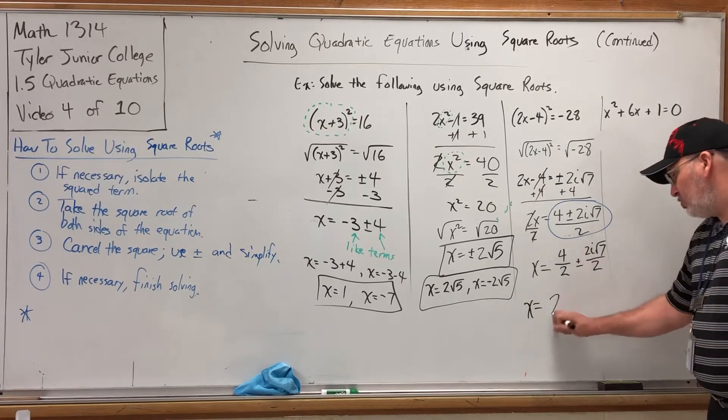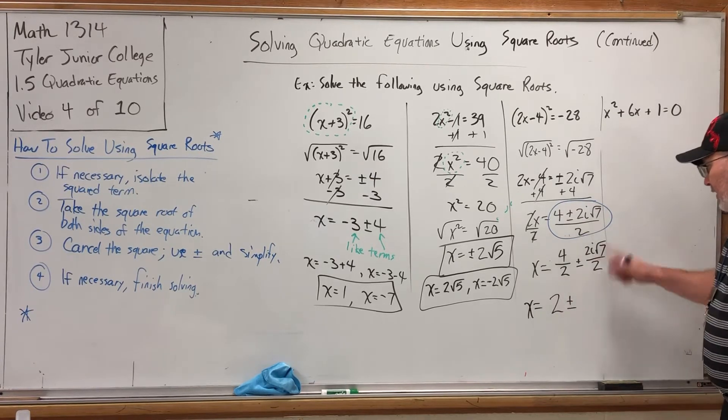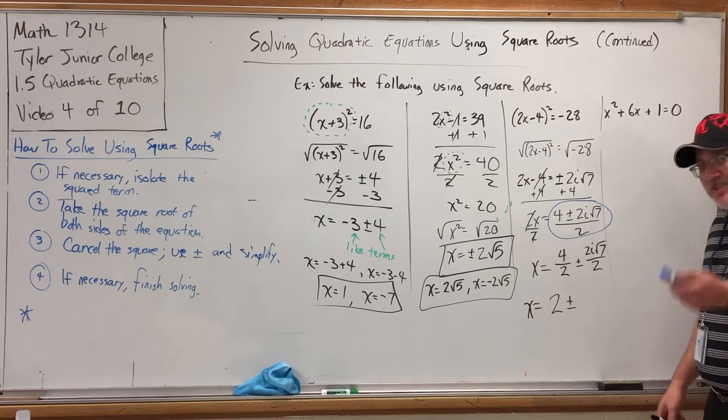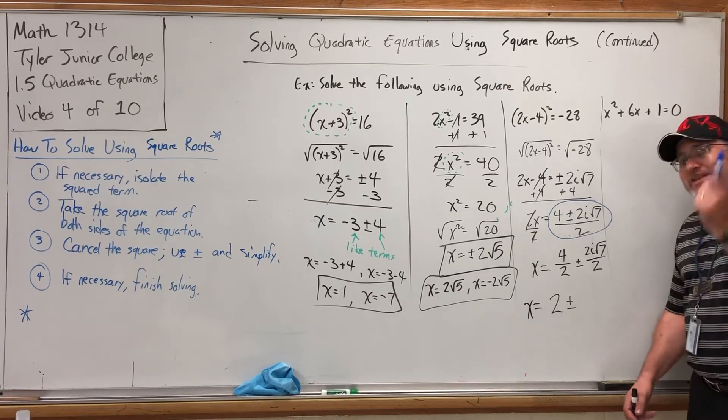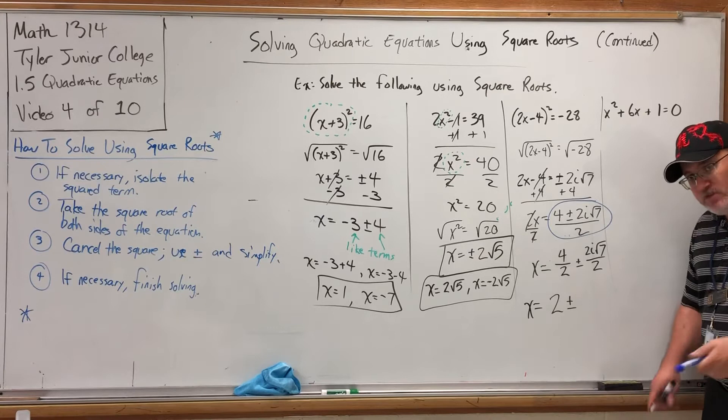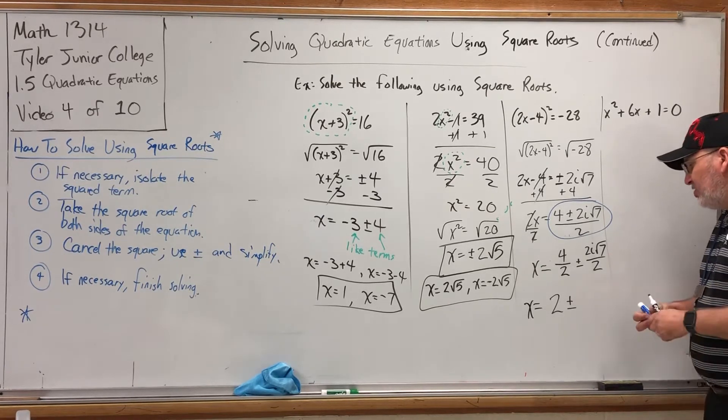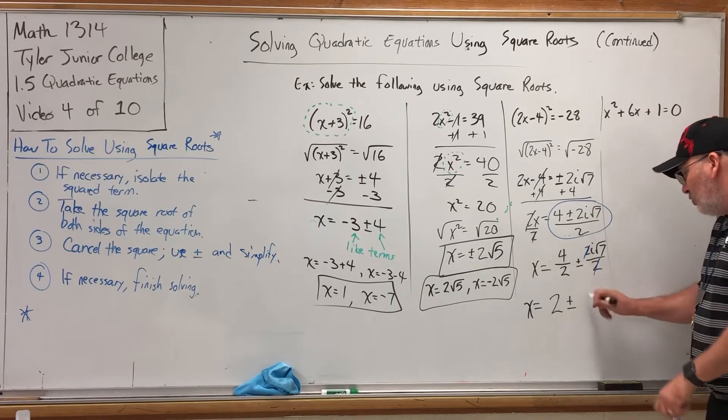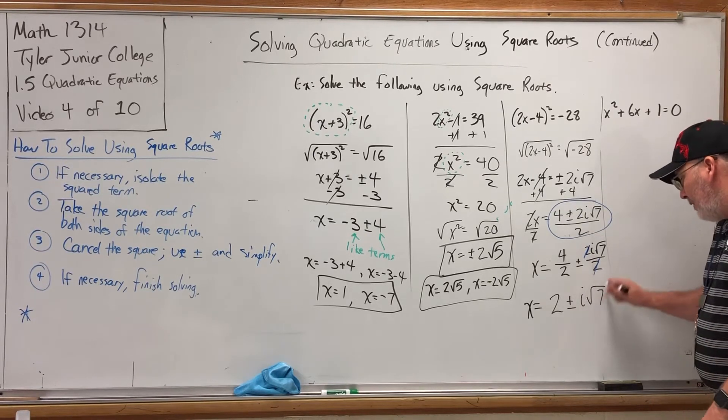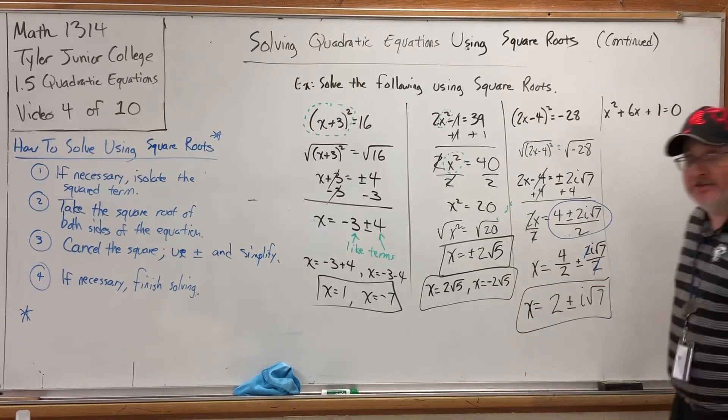And now I can reduce both of these. 4 divided by 2 is 2. And on the other one, the 2s cancel. Yes, you can cancel the 2s now, because the 2 on top of the second fraction is now just part of a multiplication problem. These 2s are gone, and that leaves me i times the square root of 7. That is one messed up answer. But it's the answer.